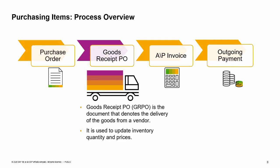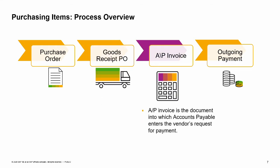The Goods Receipt PO is the document that denotes the delivery of goods from a vendor to a company. It is used to update the inventory quantities and values. The AP Invoice is the document into which your accounts payable department enters the vendor's invoice information to request a payment be made to the vendor.